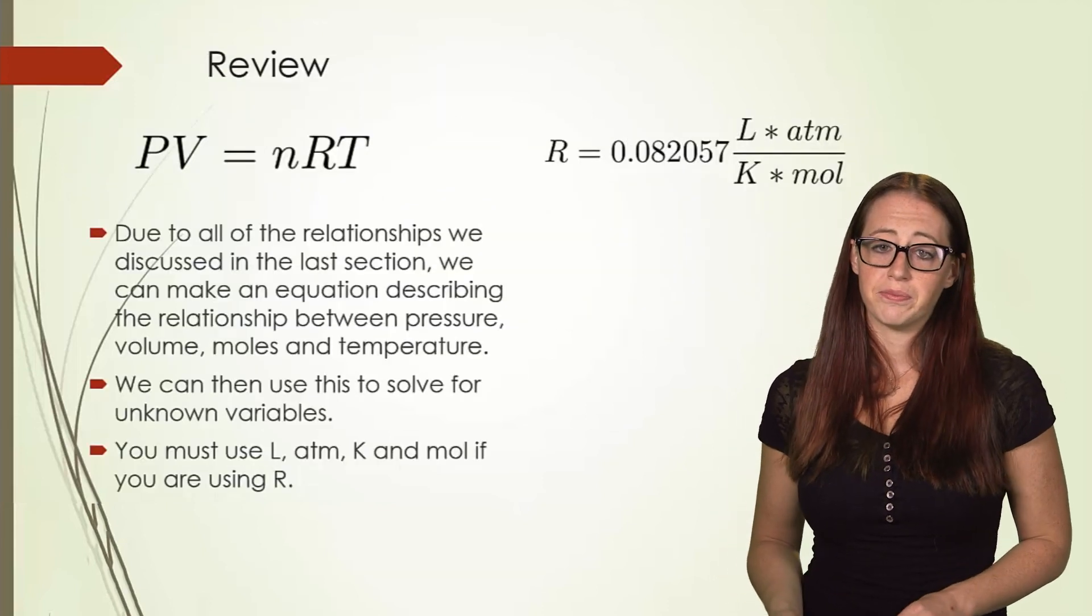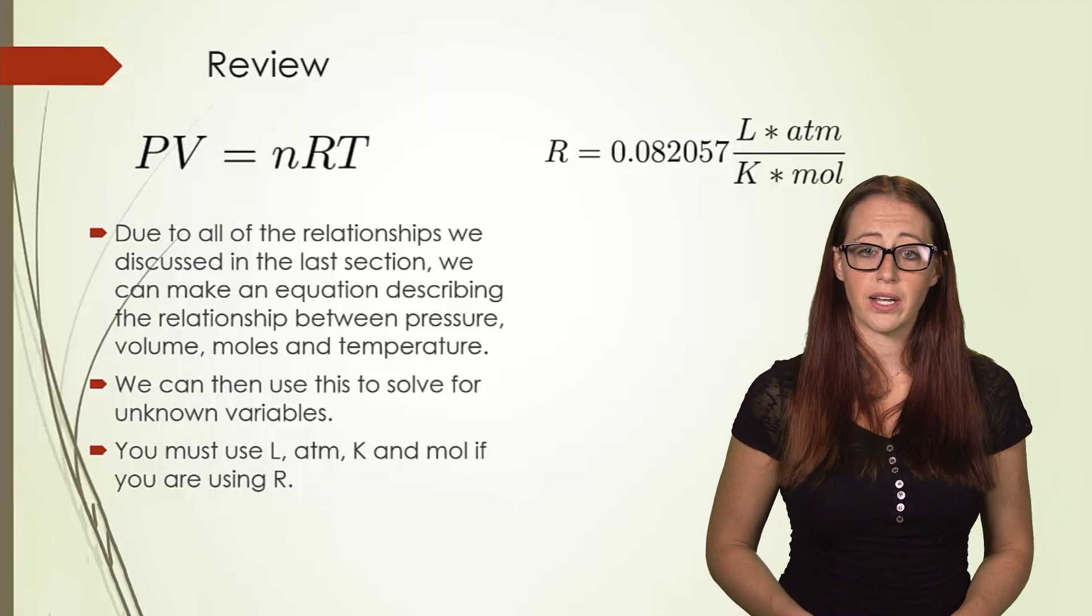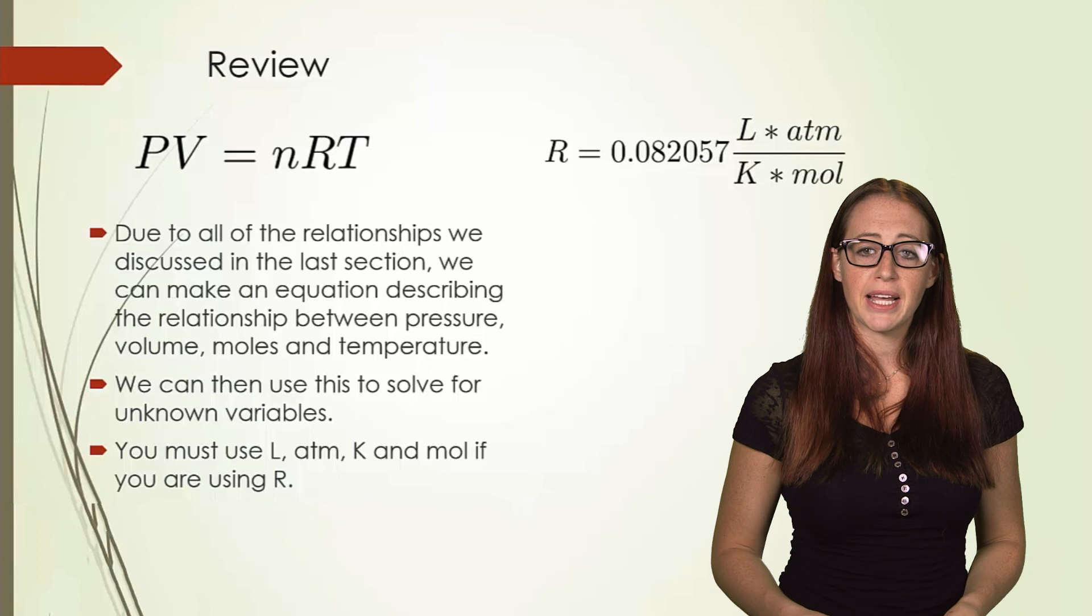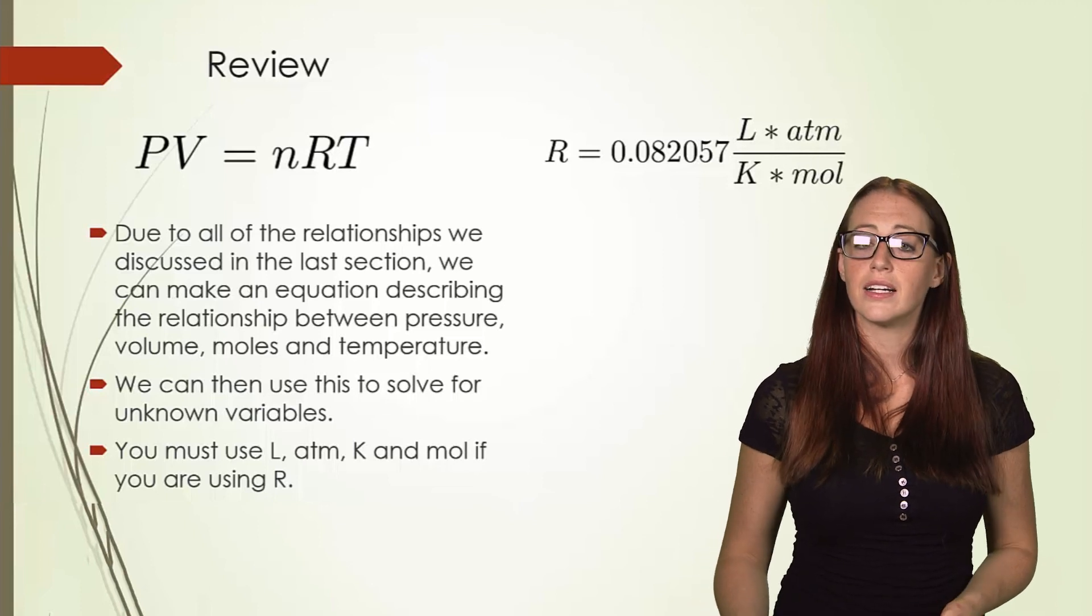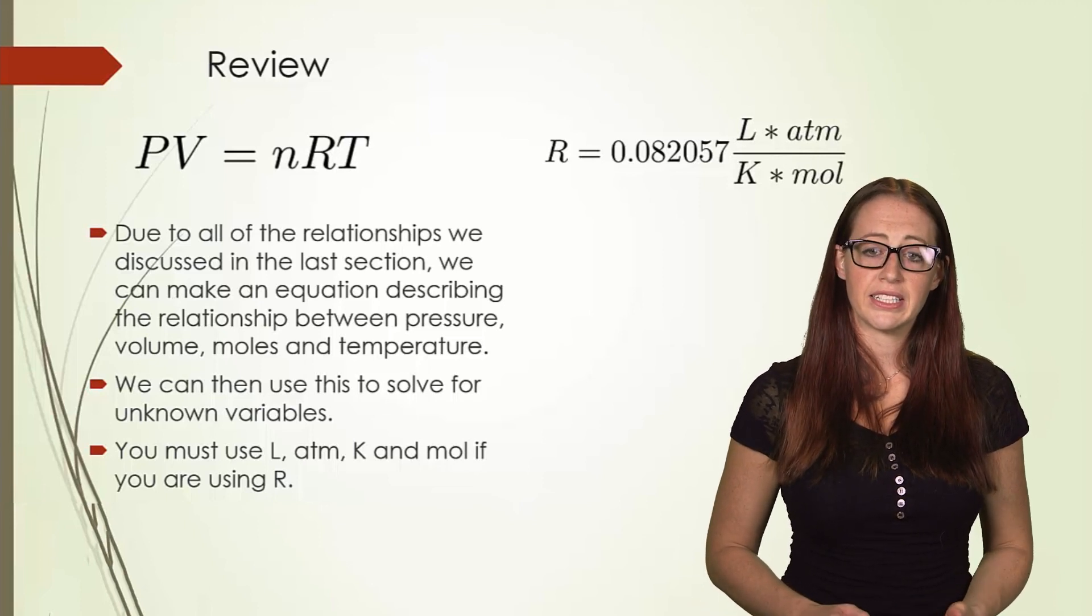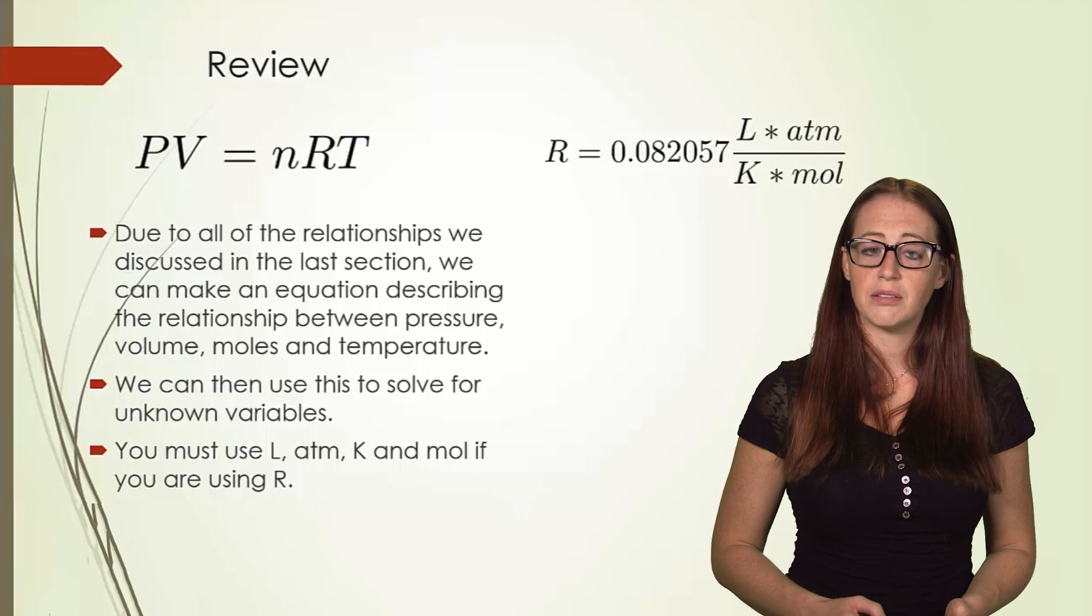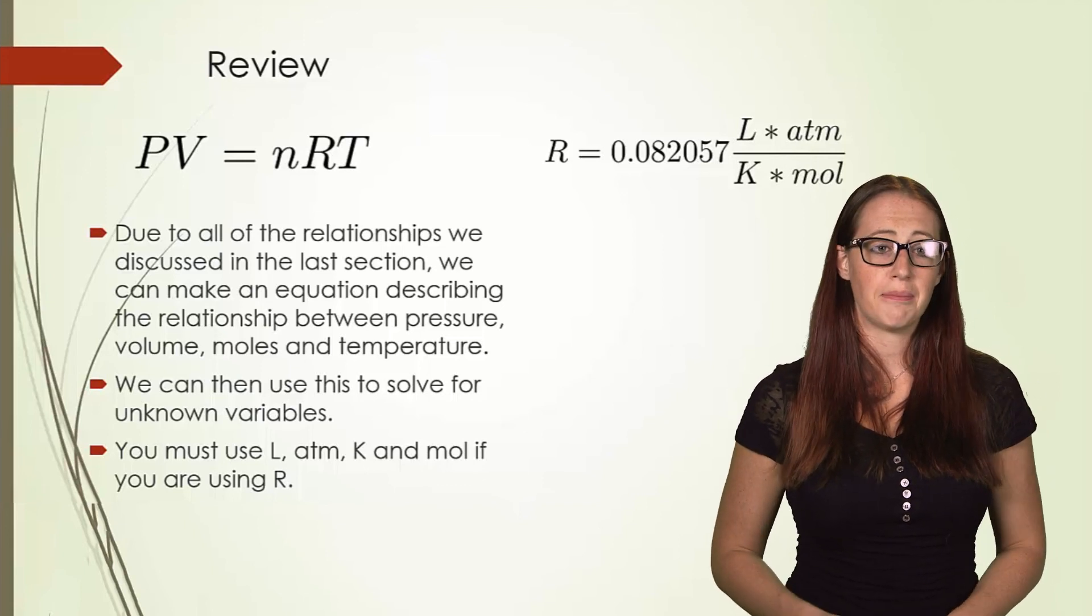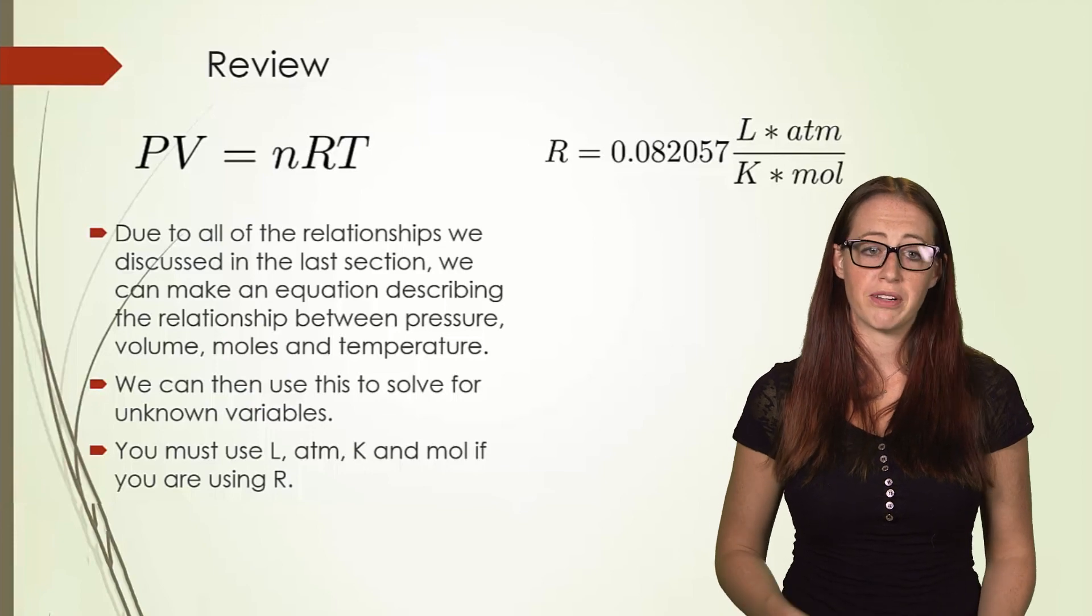In review, we have an equation that combines all of the gas laws into one. We call this the ideal gas law. And it is related by the ideal gas law constant, R, which is typically reported in liters, atmospheres, Kelvin, and moles. In future videos, we'll start getting into more complex problem solving and the two-point version of this formula.